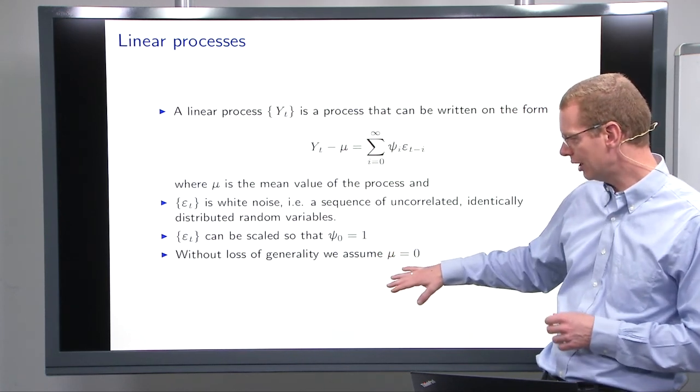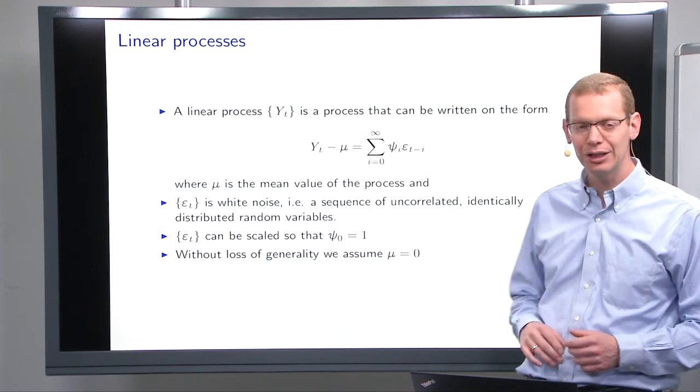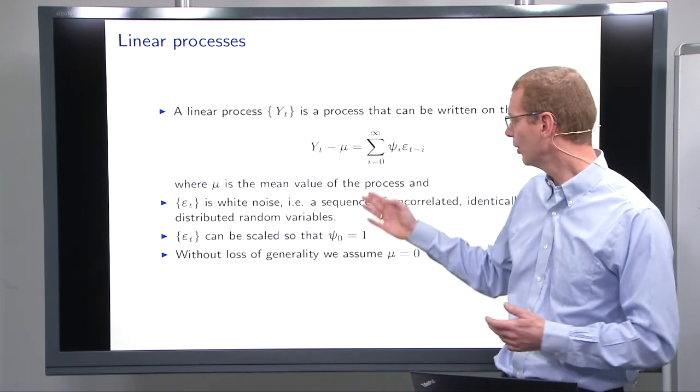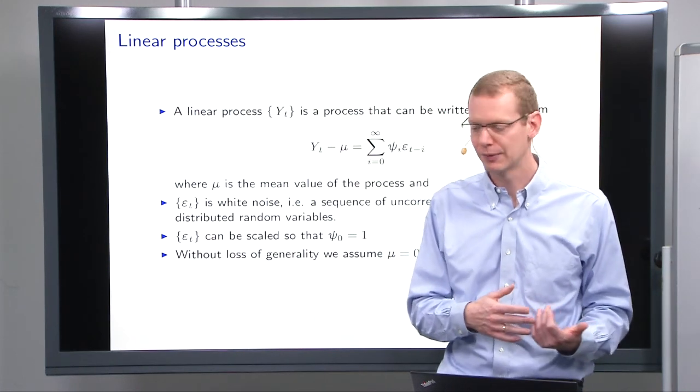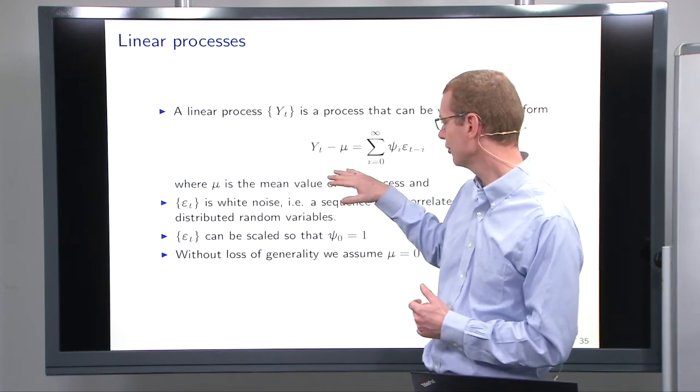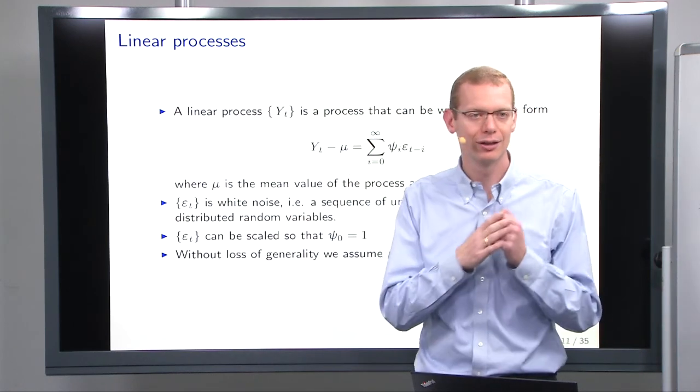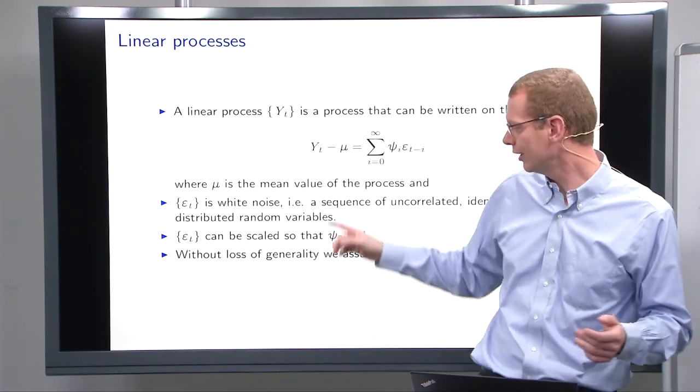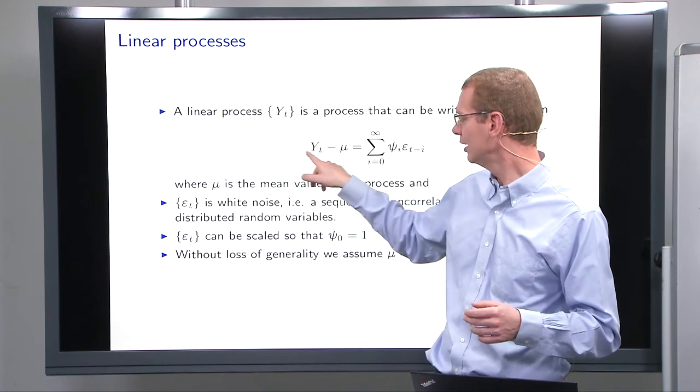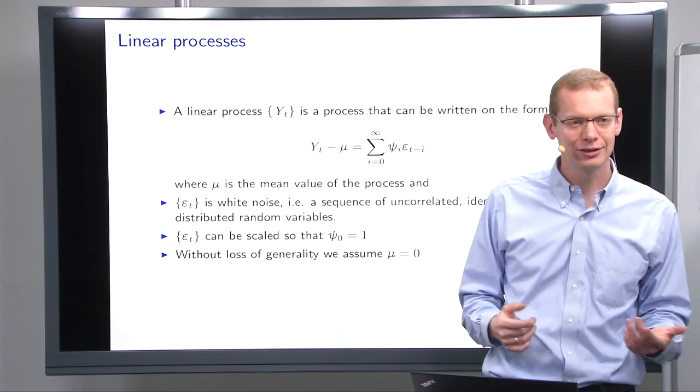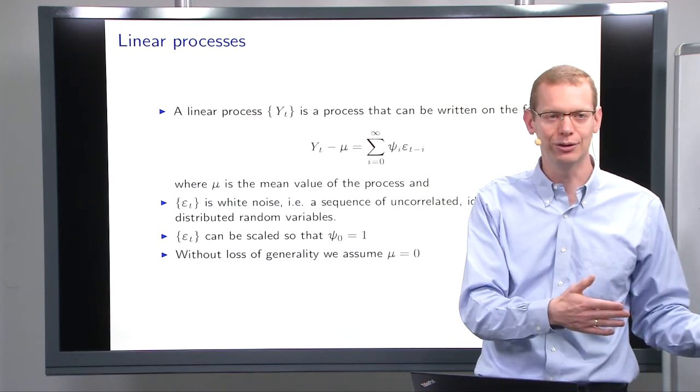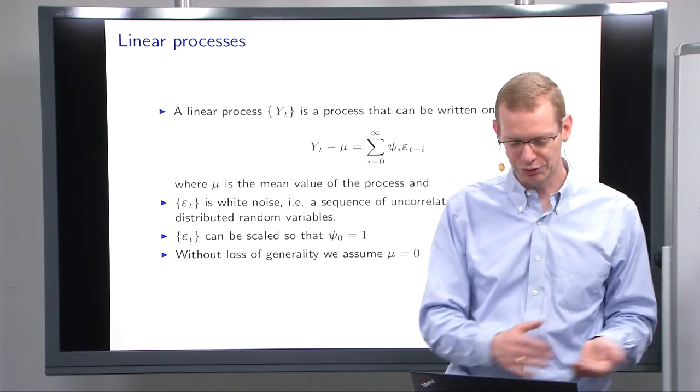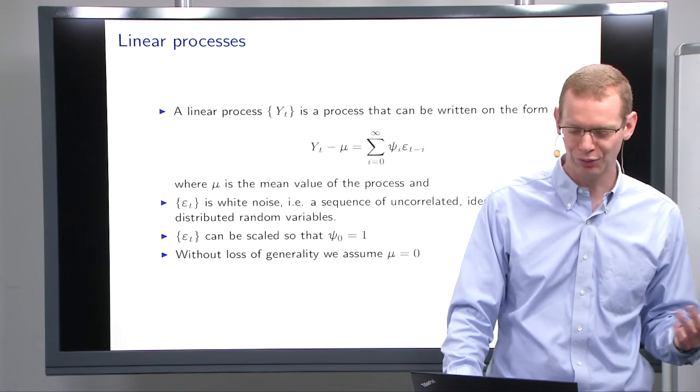Without loss of generality, as I mentioned before, we will generally assume that μ equals zero, but pretty much everything can be done with μ different from zero as well. In practice, if you have a structure like this and you know μ, you just subtract it and define a new stochastic variable, say set t equal to y_t minus μ, and then the mean value is zero. Then we proceed as if μ was equal to zero.